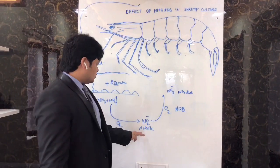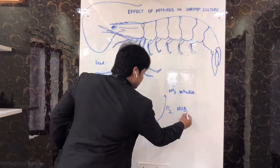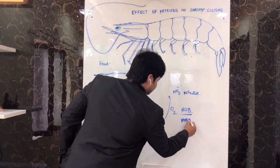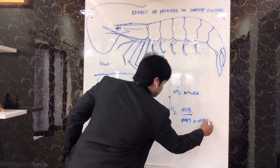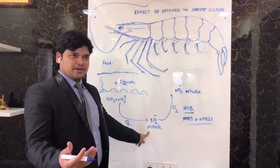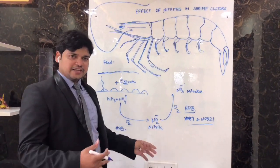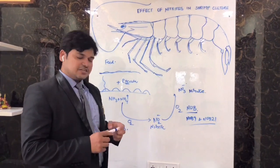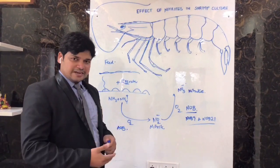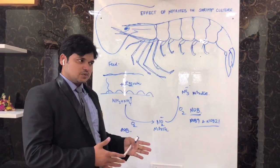In our R&D department we have isolated the NOB9 and NOB21 for removing this nitrite bacteria. We have given five samples to five ponds in five areas and we are checking the efficiency of removal of nitrites from the ponds at different salinities.